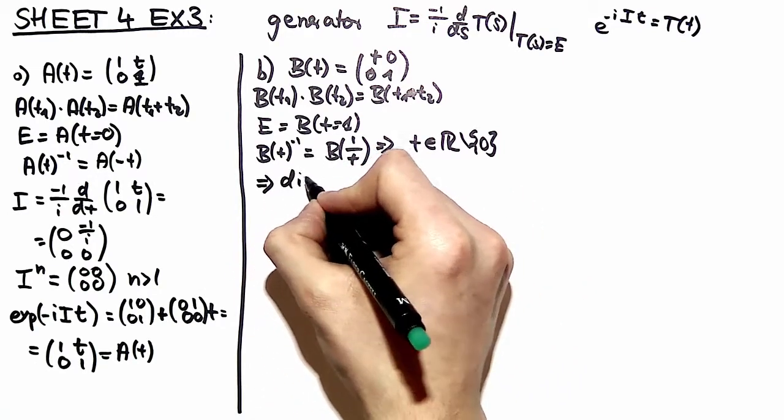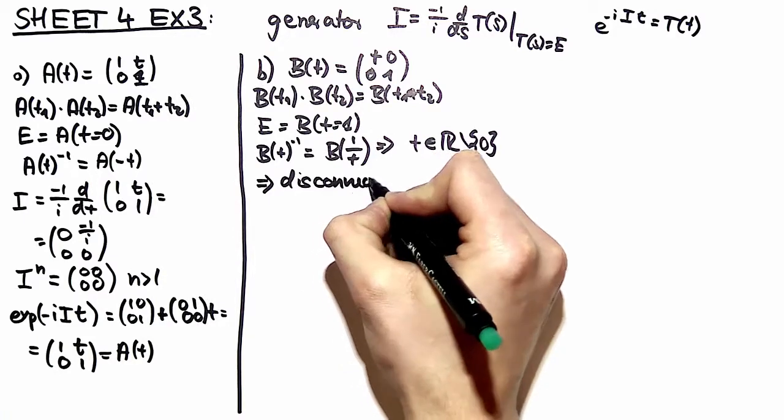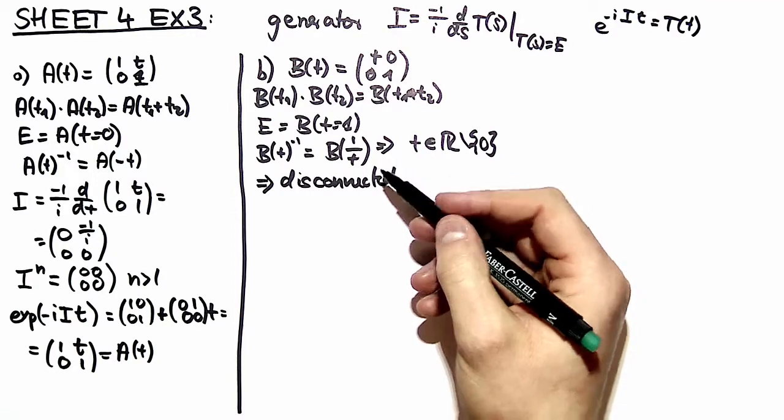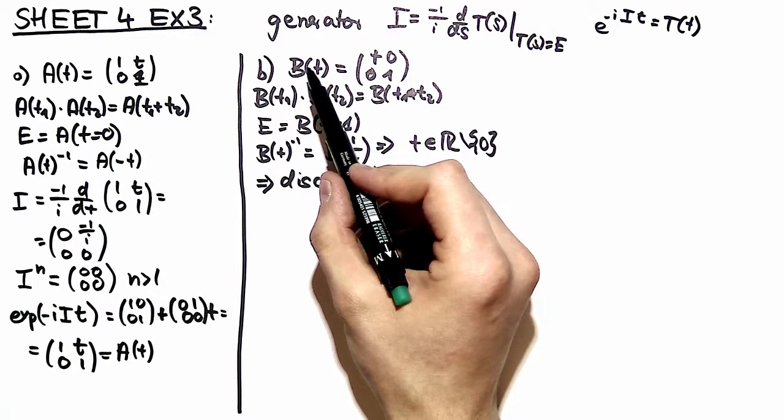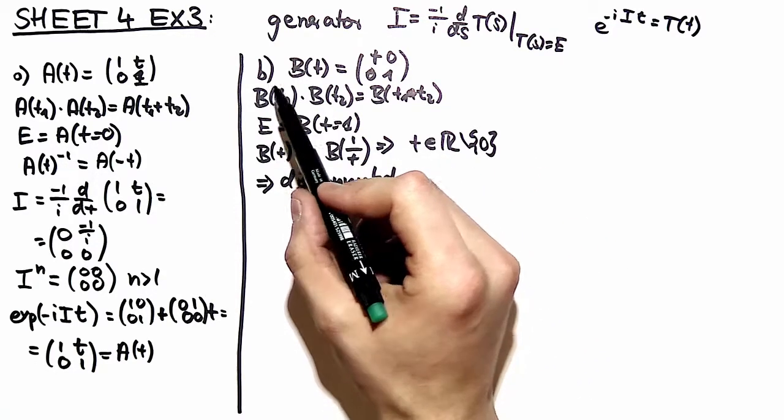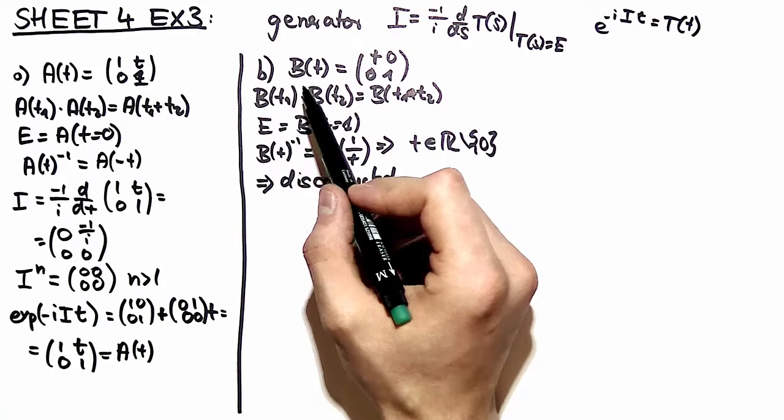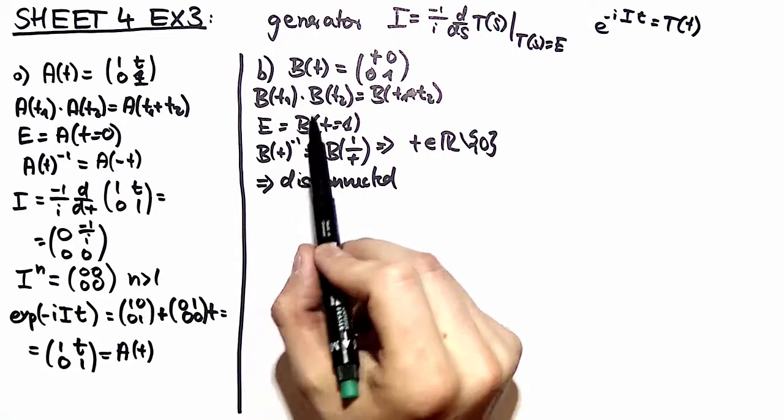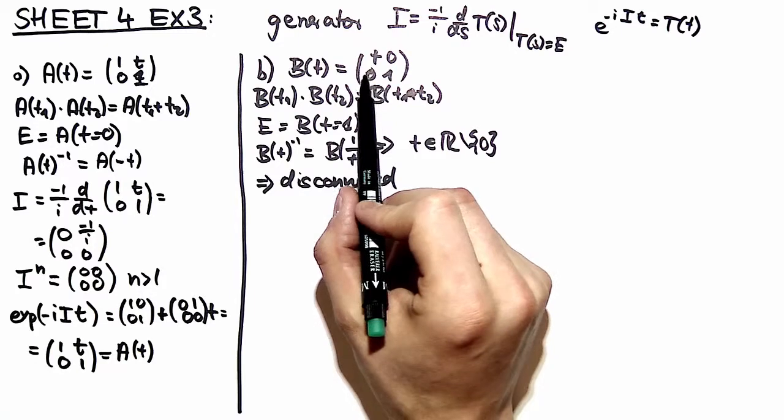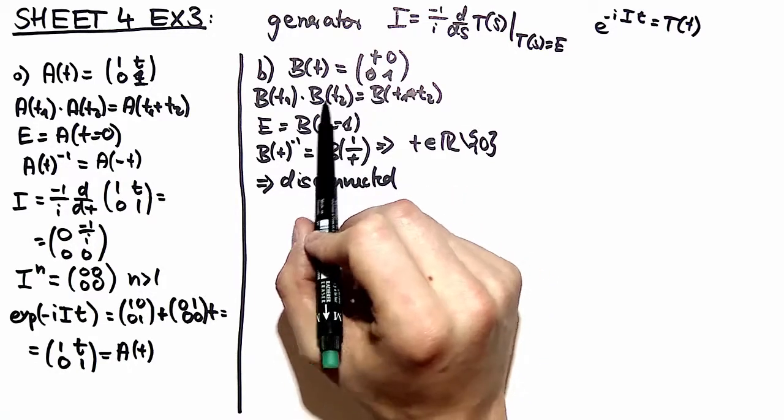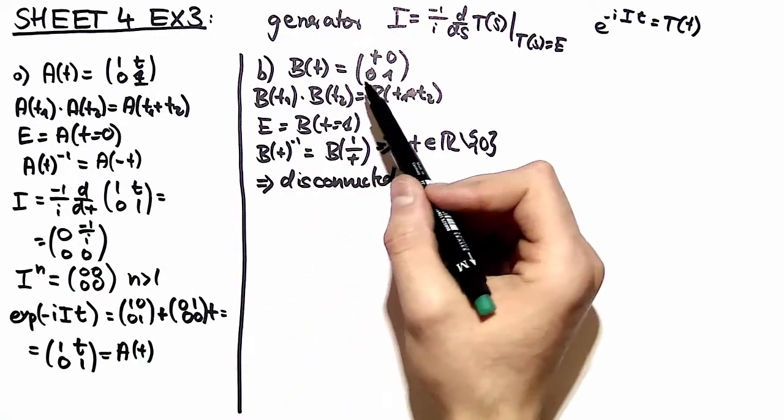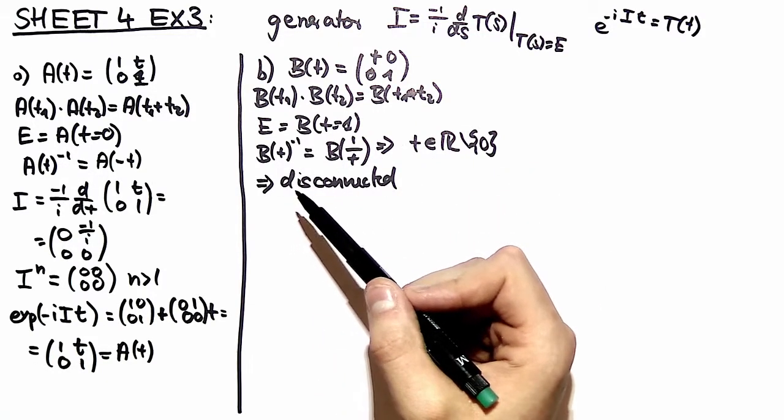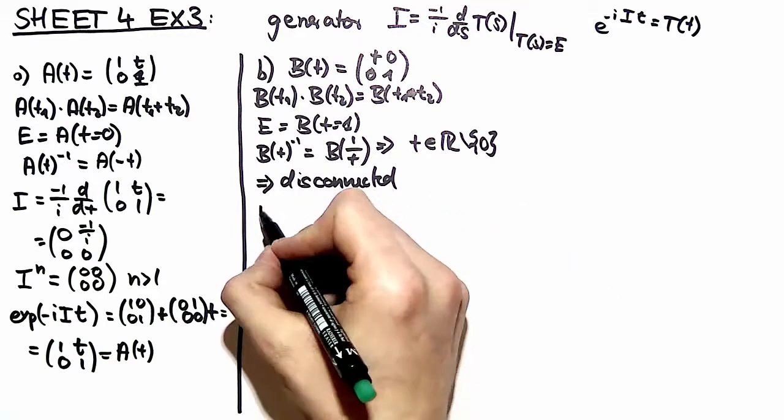Now you can conclude that this group is disconnected. It's disconnected because it's not possible to connect those elements B(t) with t greater than 0 with those where t is smaller than 0 with a path lying in the parameter space. In other words, you have matrices with determinant plus or minus 1 and they can't be connected. So we have a disconnected group and therefore we have to be careful constructing the generators, but we take a straightforward approach and see what happens.